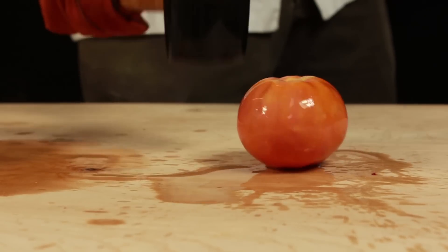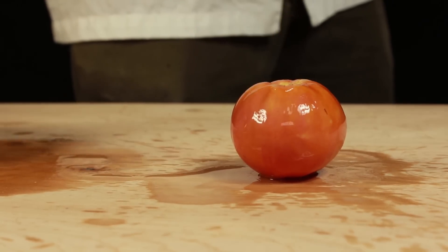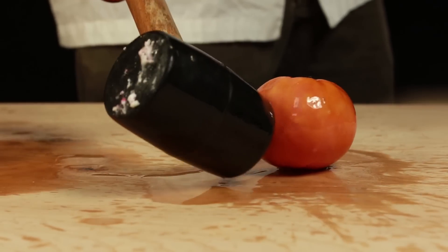The last object we chose to freeze was a tomato. It was so strong after freezing solid that it took several full-strength swings with a mallet to break it open.